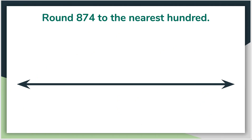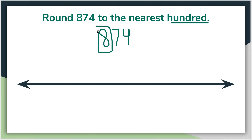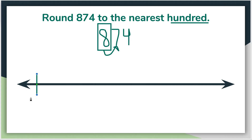Let's do another one. Round 874 to the nearest hundred. Let's rewrite 874 and round to the nearest hundred. Out of these three digits — ones place, tens place, hundreds place — the eight is in the hundreds place, pointing next door to the seven to help it out. I have to think of my hundreds. This says 800, so that's going to be my first hundred. The hundred that comes after 800 would be 900.